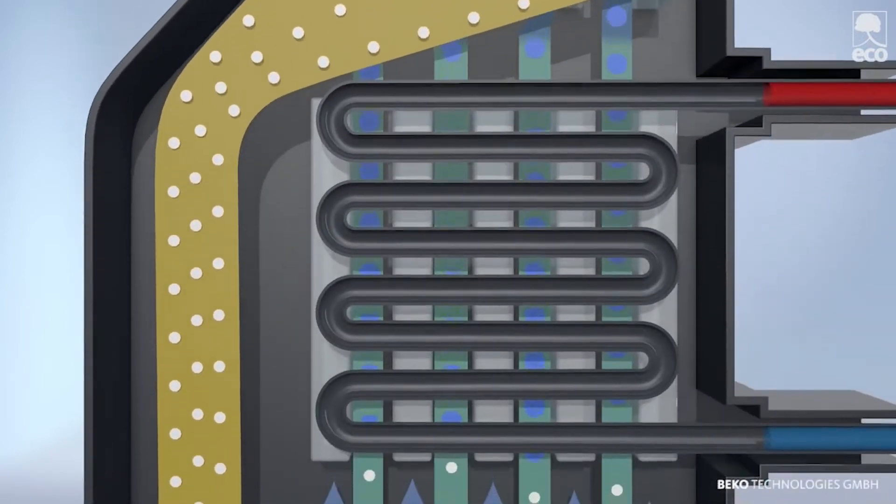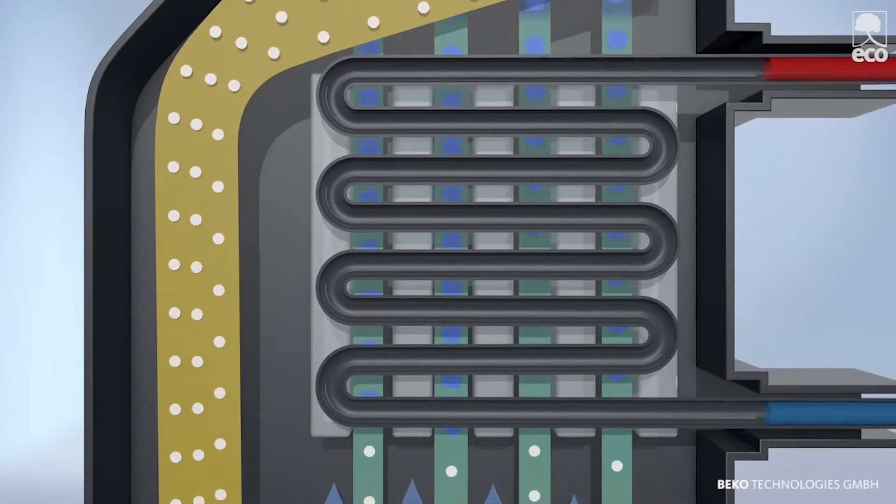It then flows through the actual cooler in which it is continuously cooled down to approximately 3 degrees Celsius. The cold temperature reduces the compressed air's ability to absorb water.